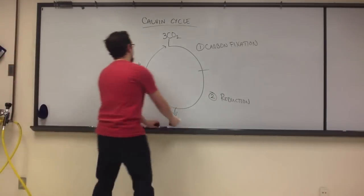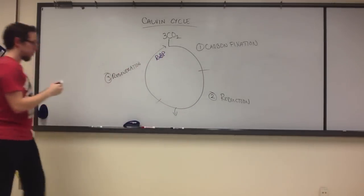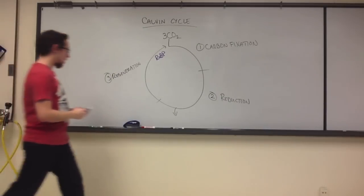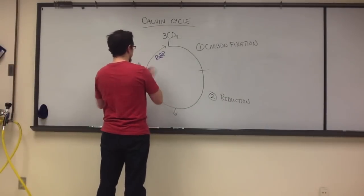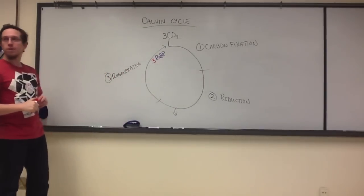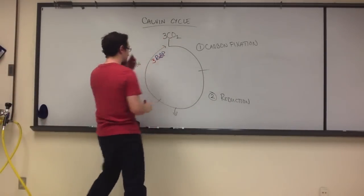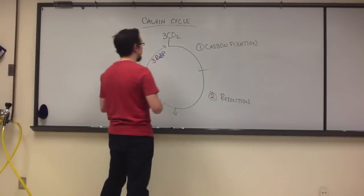So over here at this end, this is where we have our ribulose biphosphate, which is a five-carbon sugar. We've got three of these ribulose biphosphates for a total of 15 carbons. Each carbon dioxide that is affixed to one of these creates a six-carbon intermediate that's incredibly unstable.